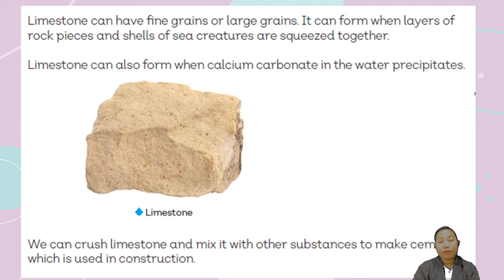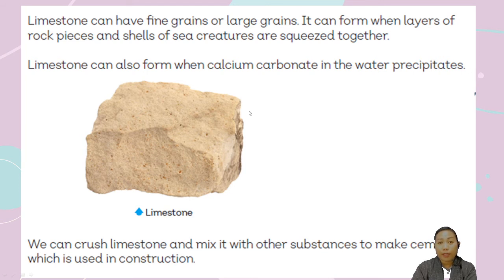Another kind of sedimentary rock is limestone. The three sedimentary rocks are: shale first, sandstone second, and limestone third. Limestone can have fine grains or large grains. Grains are the particles of the rocks — the small particles inside the rock. Limestone can form when layers of rock pieces and shells of sea creatures are squeezed together.